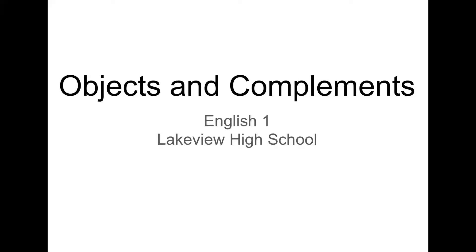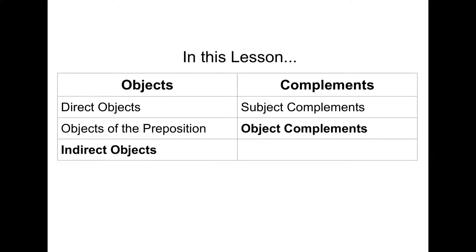Objects and complements. In this lesson, we'll go over three different types of objects — a couple that we've seen before and a new one: indirect objects. We'll also go over two types of complements. We've seen subject complements before; object complements are new.